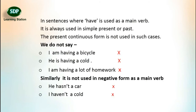In sentences where 'have' is used as a main verb, it is always used in simple present or past. The present continuous form is not used in such cases. We do not say: 'I am having a bicycle,' 'He is having a cold,' or 'I am having a lot of homework.' Similarly, it is not used in negative contracted form as a main verb. We do not say: 'He hasn't a car' or 'I haven't a cold.'